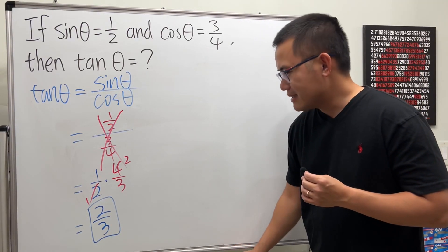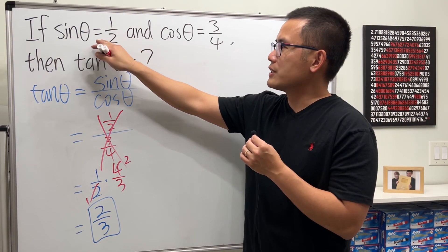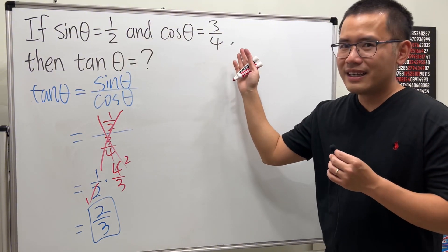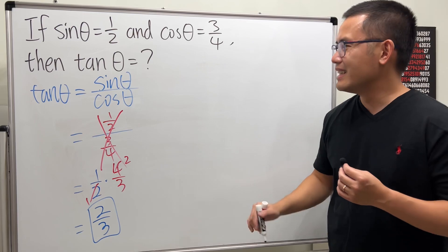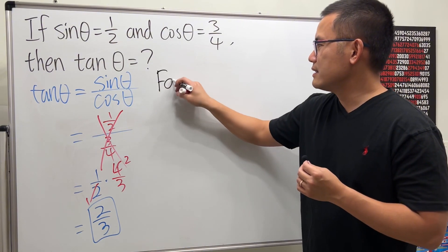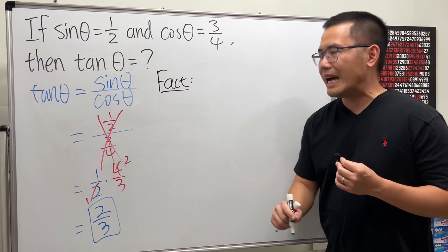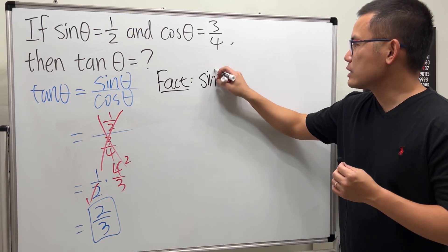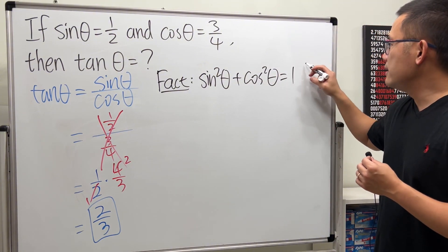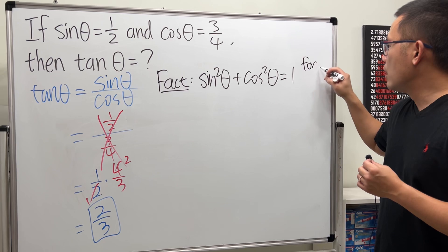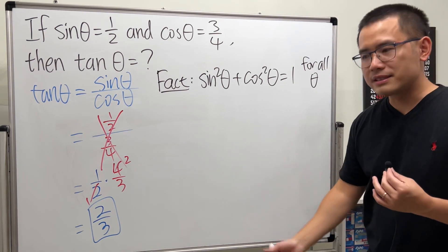Why is this wrong though? Let's talk about it. Have a look. I was just selecting random numbers for sine and cosine, but we cannot do that. Here is a fact — this is the Pythagorean identity. We must always have the fact that sin²θ + cos²θ must equal 1, and this has to be true for all theta values: negative, positive, even complex numbers.